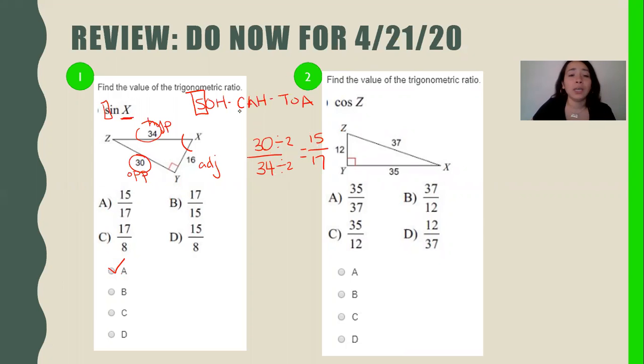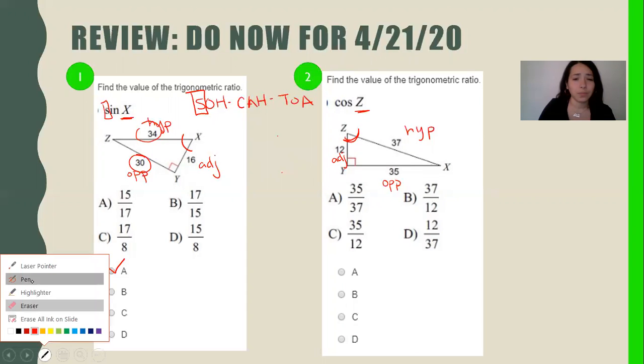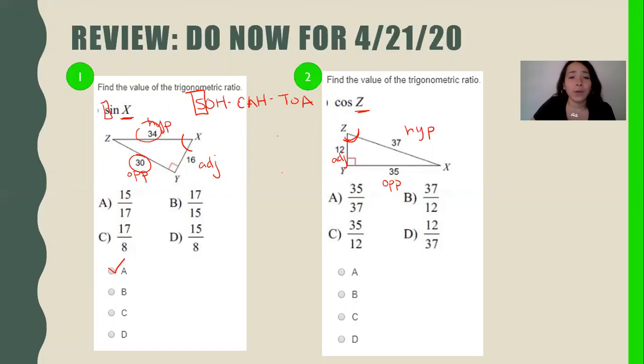Let's look at number two. Same thing using SOHCAHTOA. Our focus angle is Z. What's the opposite of my right angle? That's my hypotenuse. What's the opposite of my focus angle? That's my opposite. This one right here is my adjacent.